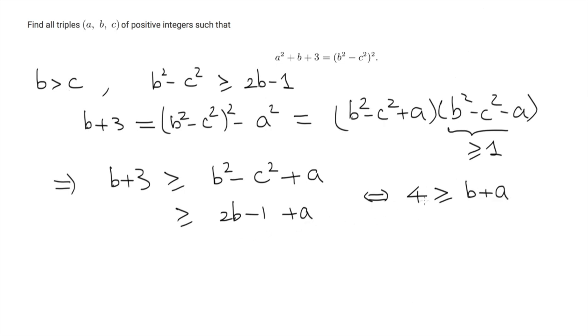So now it remains to check simple cases. And indeed, there is only one solution, which is (a,b,c) = (2,2,1).